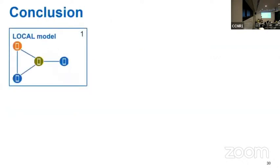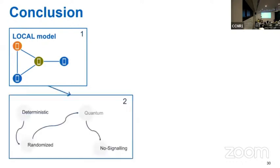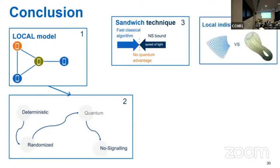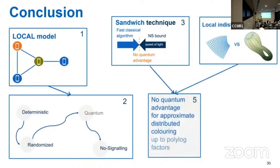So to recap, I've introduced the local model of distributed computing. I've talked about coloring. I've told you that there were four variants from weakest to strongest in this model. That our argument came from combining fast classical algorithms and no-signaling bounds, and finding that when they match, there's no quantum advantage. And that these no-signaling bounds mainly came from adapting this local indistinguishability argument to the no-signaling scenario. From this, we conclude that we've characterized the hardness of approximate distributed coloring up to polylog factors. So thank you very much for your attention. I'll be happy to take questions.